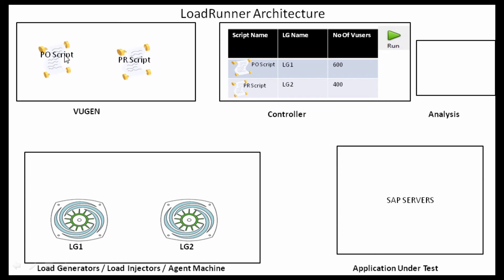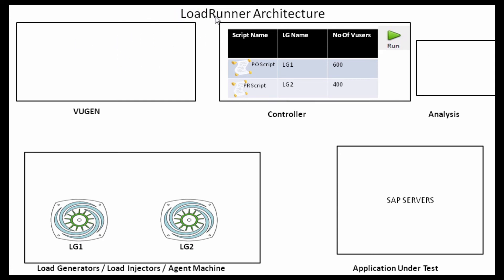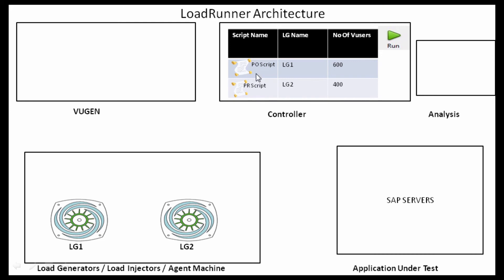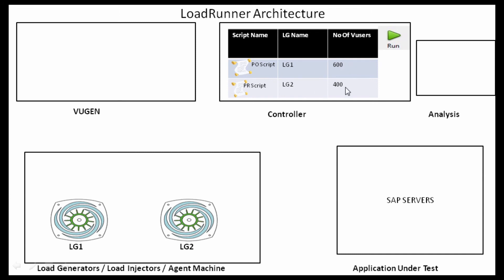Once you create the scripts in VUgen, you execute them for multiple iterations to make sure they are working fine, then you upload those scripts into the Controller. Let's assume the Purchase Order script is being executed with 600 virtual users and the Purchase Requisition script with 400 virtual users. The numbers may not be this high in reality — in my recently concluded project I applied close to 50 users for Purchase Order and 20 for Purchase Requisition — but I've put high numbers here just to show that you could have them.